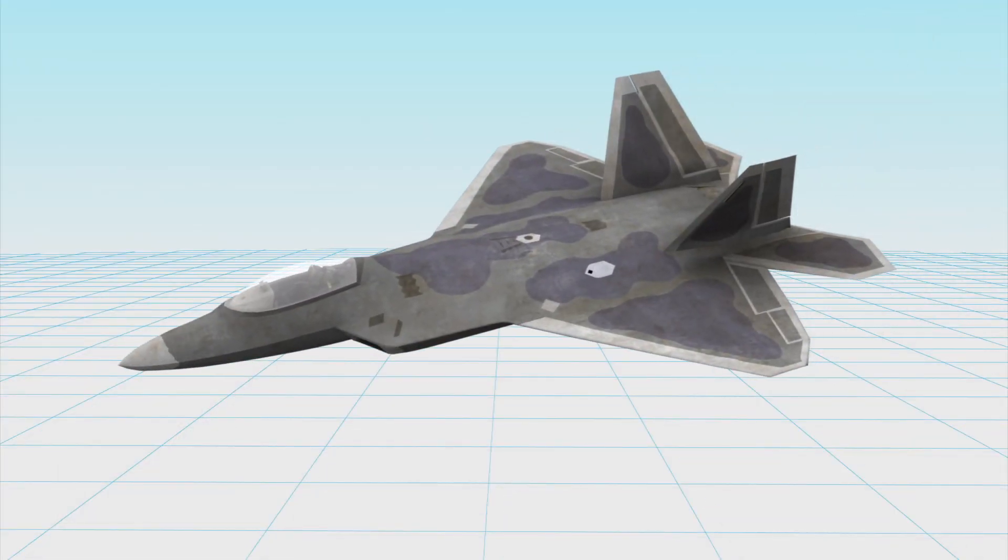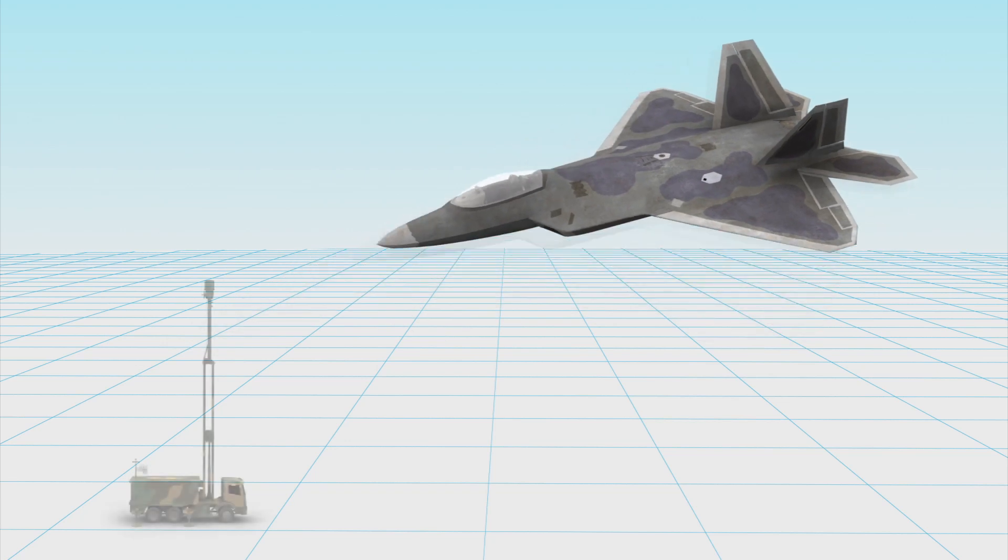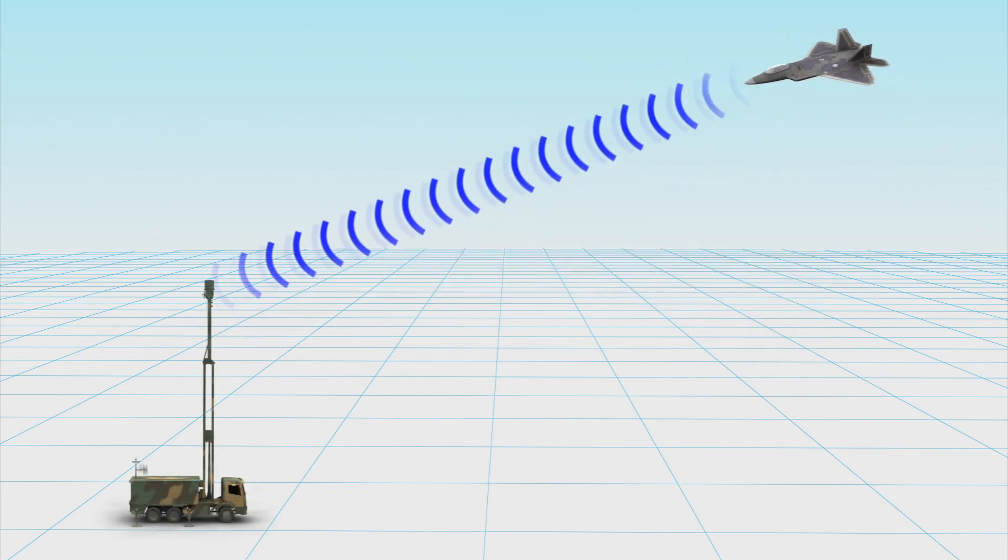China's DWL-002 passive radar system, which consists of three stations, reads the electronic signals emitted by aircraft to detect their presence.